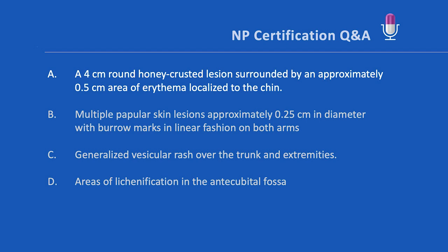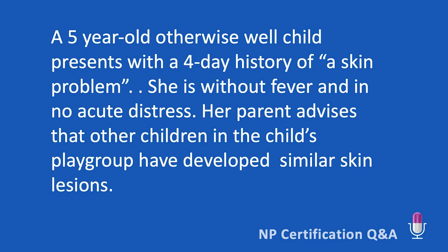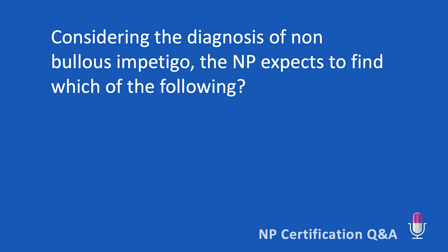With this information in mind, let's take a look at the question and the possible answers. A five-year-old otherwise well child presents with a four-day history of a skin problem. She's without fever and in no acute distress. Her parents advise that other children in their child's play group have developed similar skin lesions. Considering the diagnosis of non-bullous impetigo, the NP expects to find which of the following.